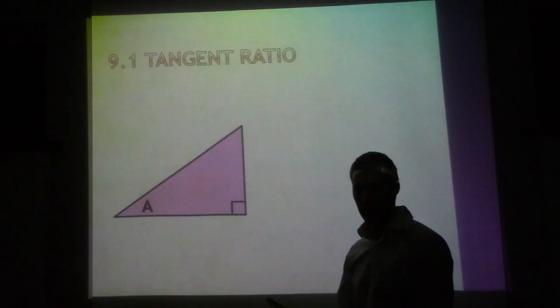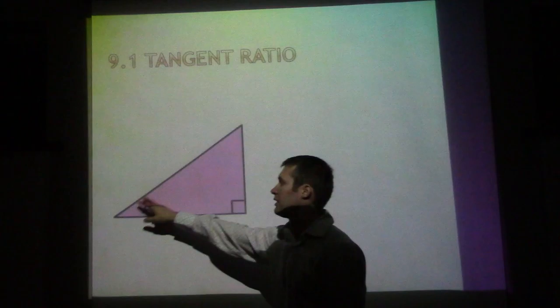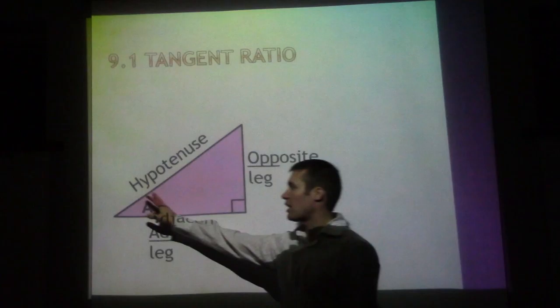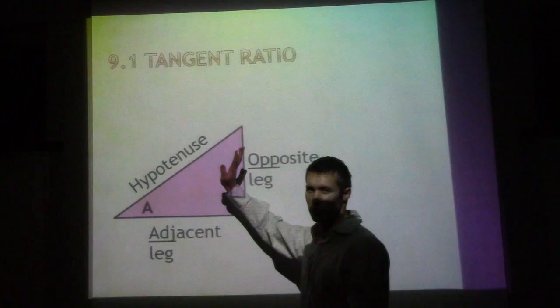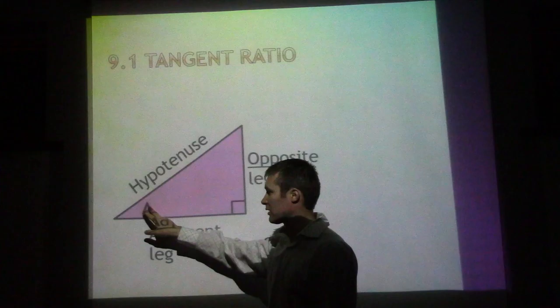This only works in a right triangle. If we have a right triangle with a right angle and then angle A and angle B, tangent ratio is the angle that's opposite and adjacent next to it. The hypotenuse is still the hypotenuse, so we don't use it for the tangent ratio.